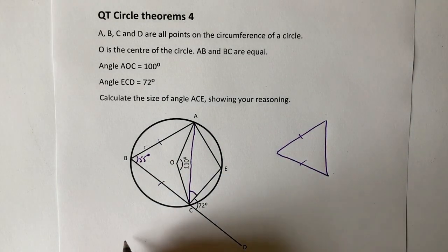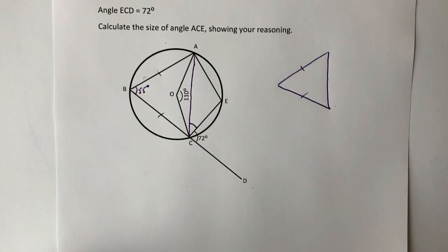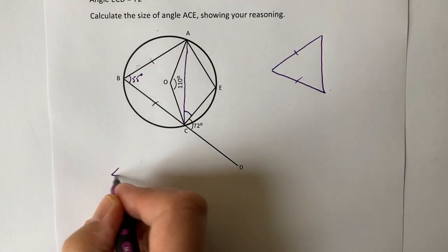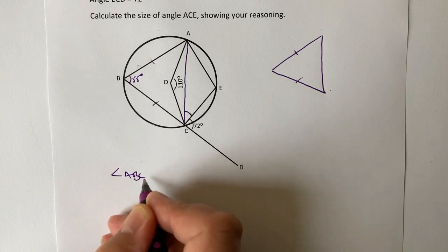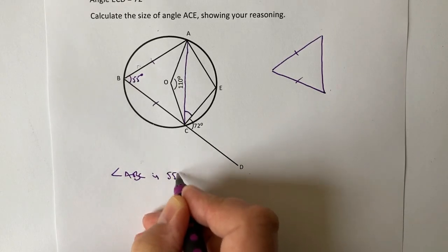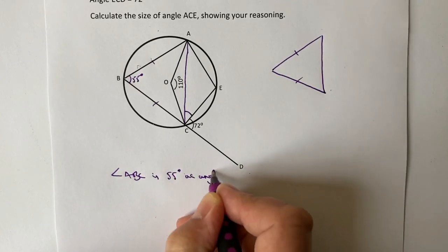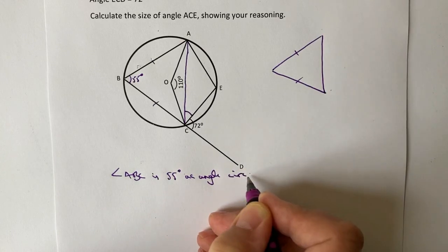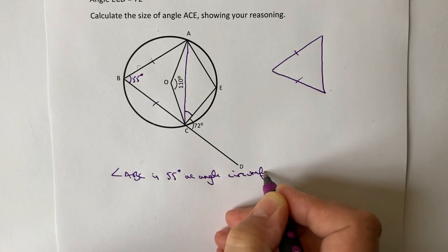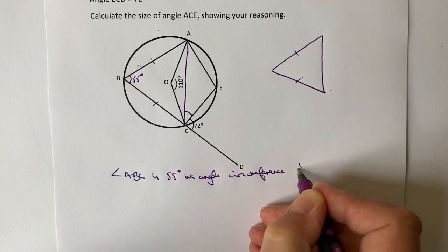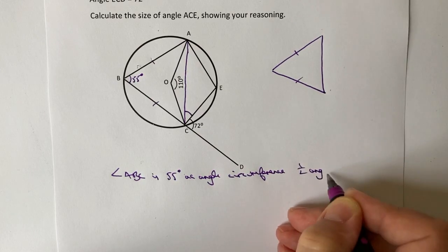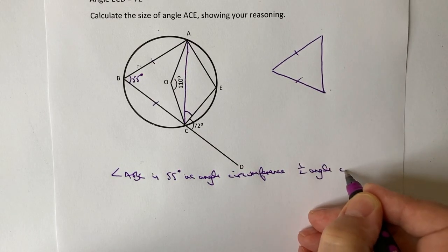So the first part of this particular question with showing your reasoning is you need to work out that this is going to be 55 degrees. And the reason that angle, if I write this at the very bottom here, that angle ABC is 55 degrees as the angle at the circumference is half the angle at the centre.